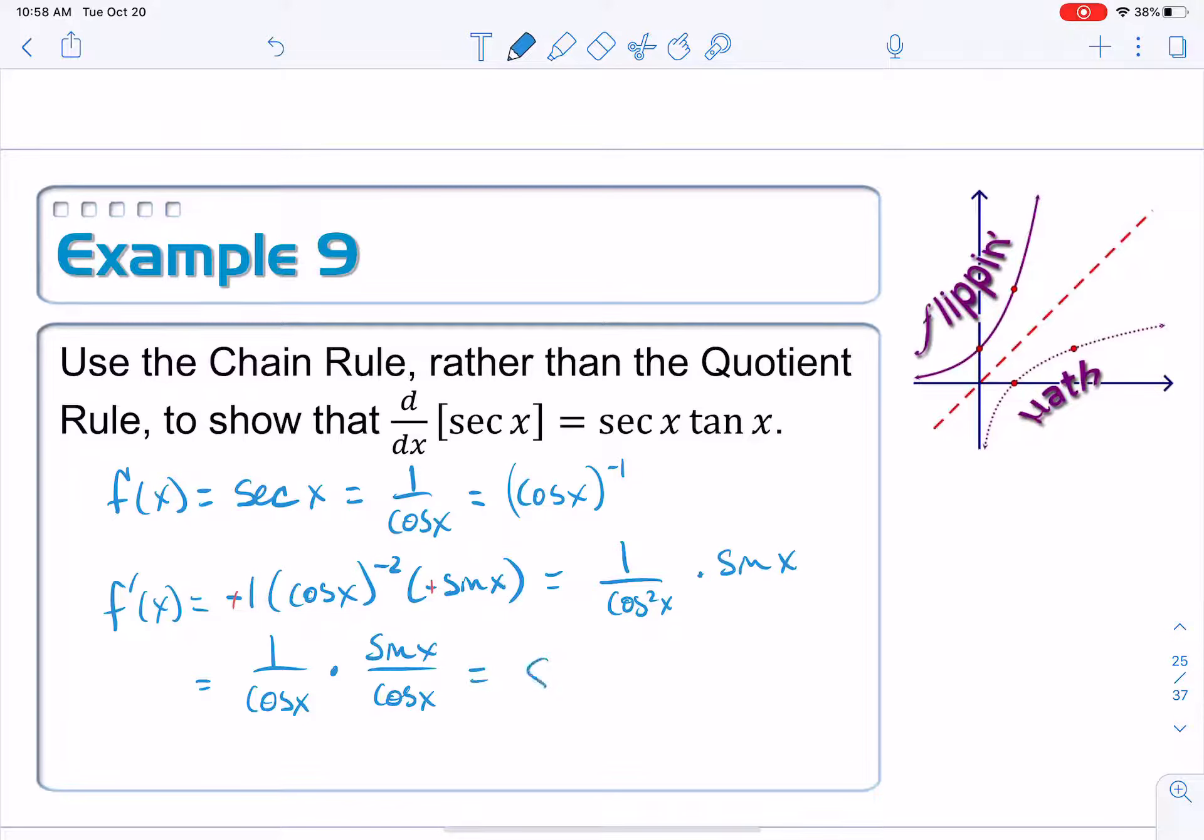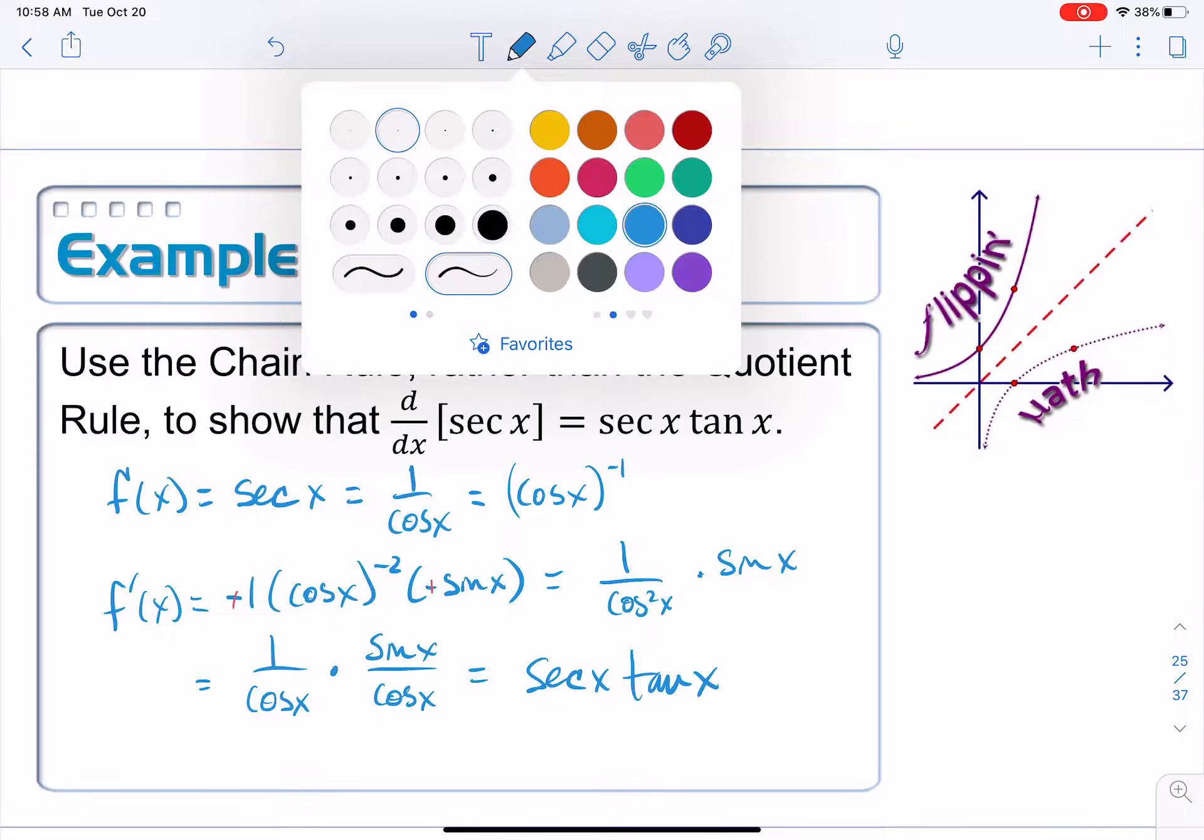What's 1 over cosine? It's secant. What's sine over cosine? It's tangent. And there we got it. Ta-da!